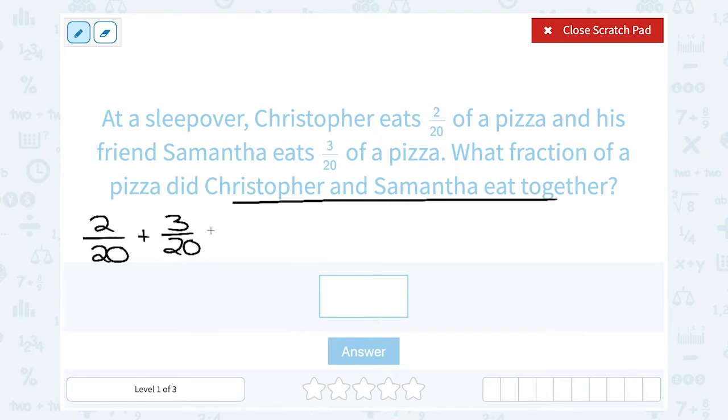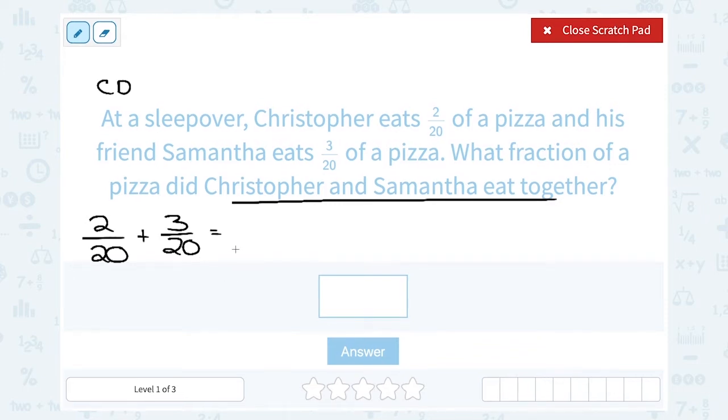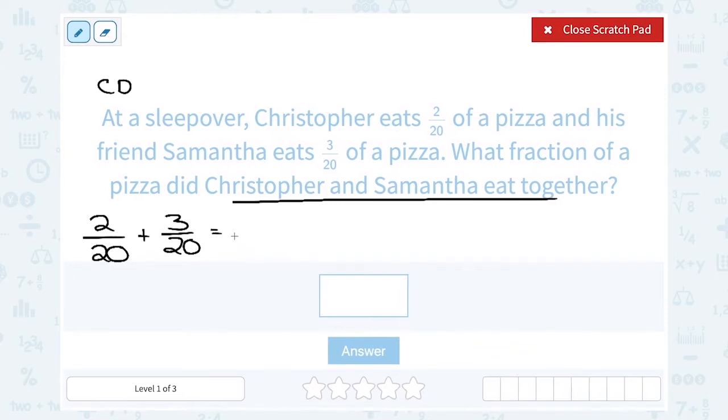Now before we keep going, let's take a second and look, because remember when you're adding or subtracting with fractions, you always need to have a common denominator. So that common denominator, common means the same, and denominator means the number on the bottom of the fraction. In this case, they're already both 20.